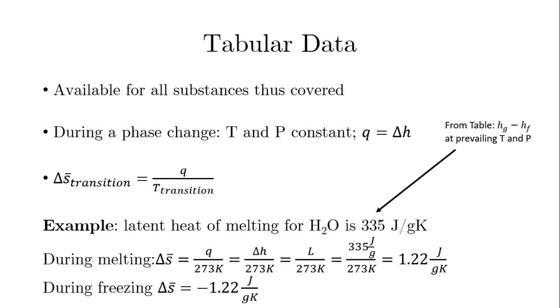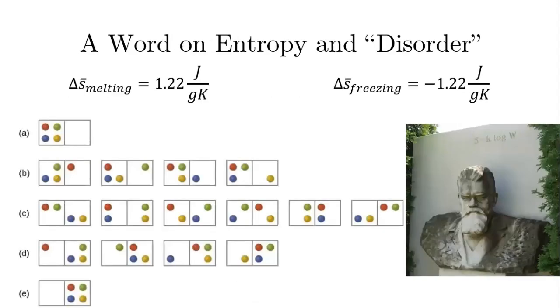And so that would be, in that sense, reversible, nothing is being lost during that transition. So while we're on that, here we are showing you here that when you melt, the change in entropy is positive, and when you freeze, the change in entropy is negative.